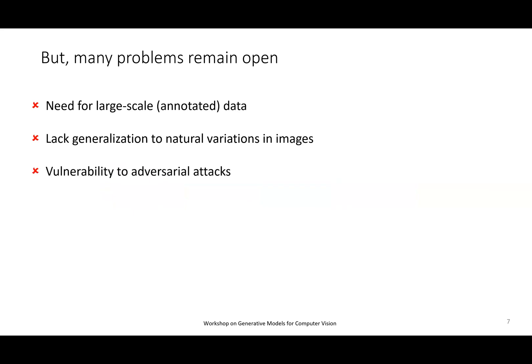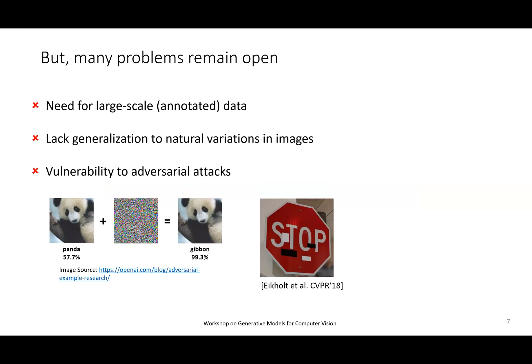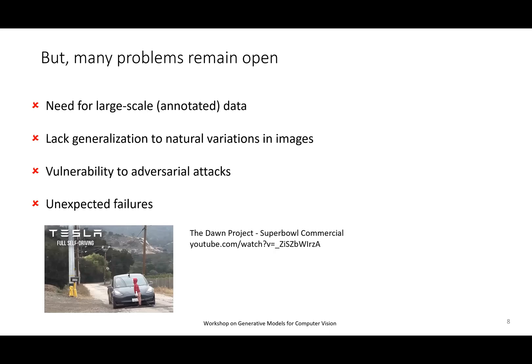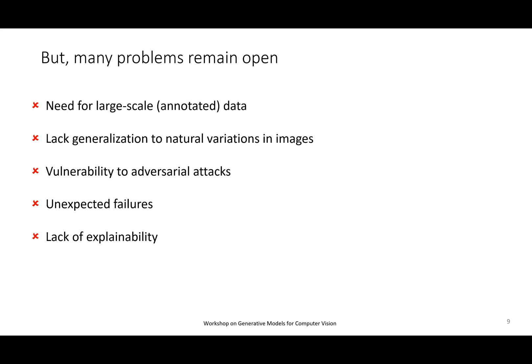We also have the vulnerability to adversarial attacks. You probably know perturbation-based attacks — they might not always be practically relevant, but there are practically relevant adversarial attacks that actually hurt models. We also have unexpected failures in vision models. You deploy your vision model in the real world and find it works very well most of the time, but sometimes it just fails horribly. For example, when you Google Tesla failures, you find hundreds of videos of really unexpected failures — like when people put puppets on the street and the Tesla car just drives over them. We cannot predict these failures. That's connected to the problem of a lack of explainability and the black box nature of these models.